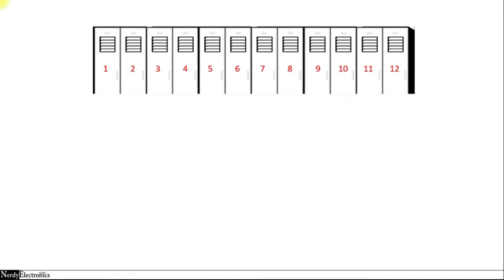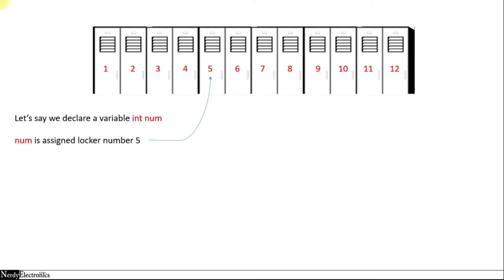For this example to understand pointers, let's take a variable called num and let's say that when the program is executed, the variable num is given the locker number 5. So locker number 5 is given the name num. Now when we assign a value to this variable, we say num equals to 20. The value 20 gets stored in the location 5, or in the locker number 5.